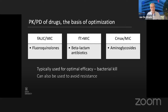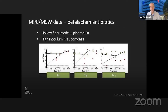Typically we use these indices for efficacy and treatment, but also to avoid resistance. This has mainly been studied in animal models and in vitro models. I'll show you now some data from an in vitro hollow fiber model, where you can actually mimic an infection not just for 24 hours but for longer days, and look at how pathogens behave when different concentrations of antimicrobials are present.